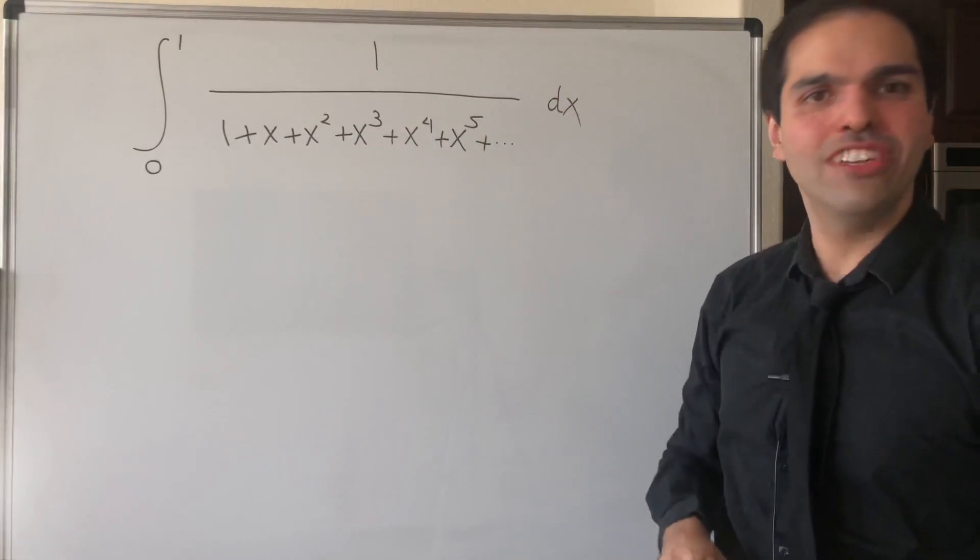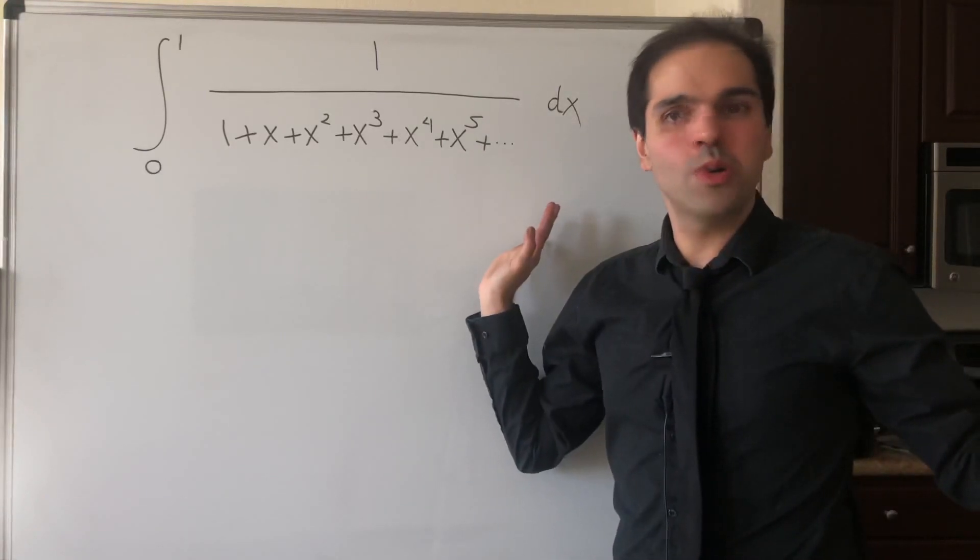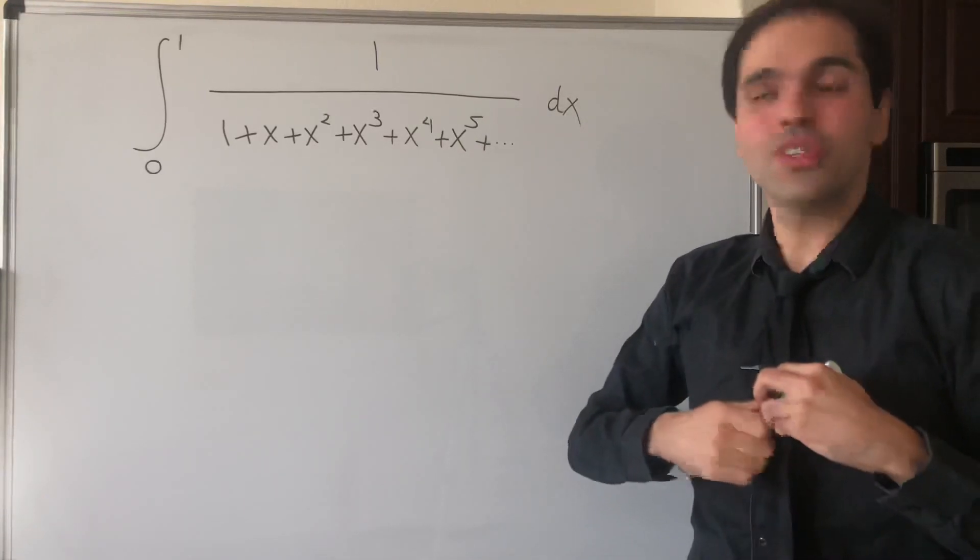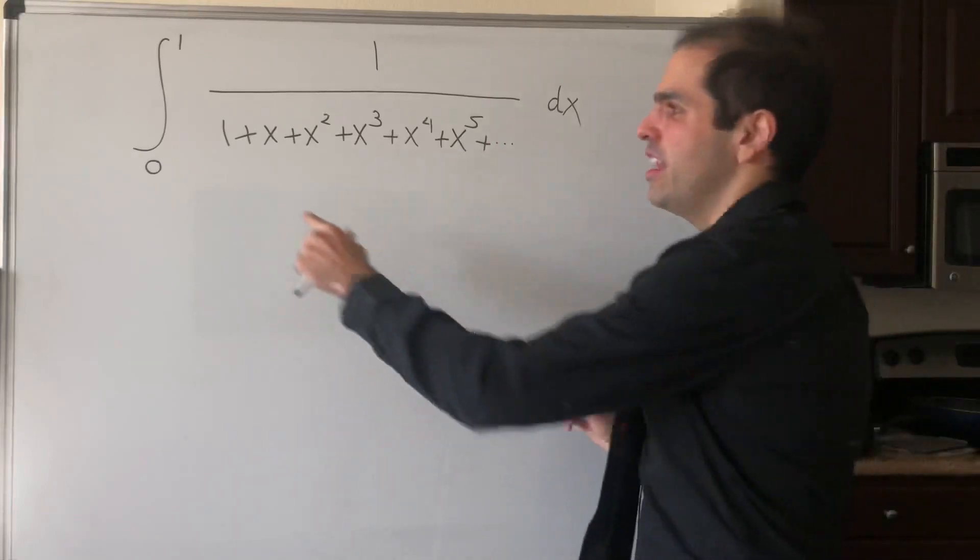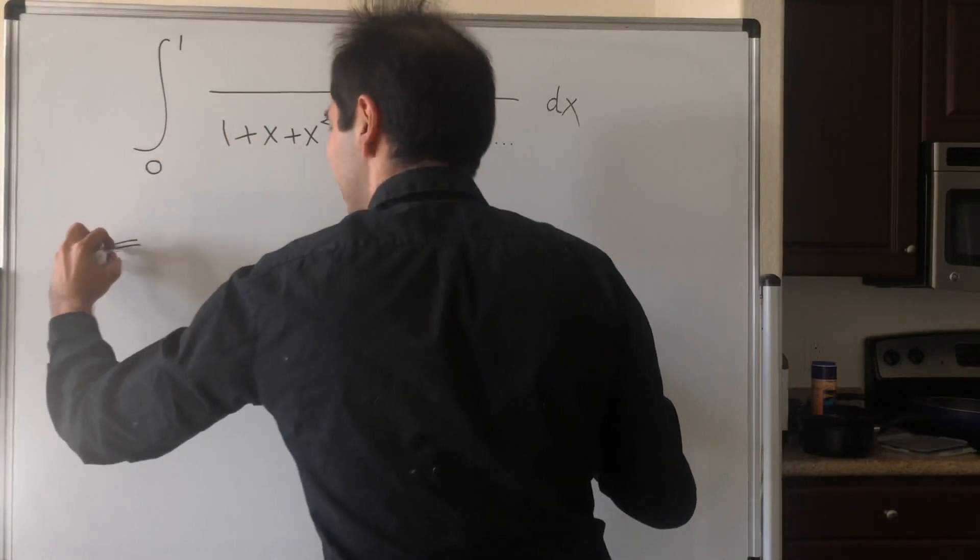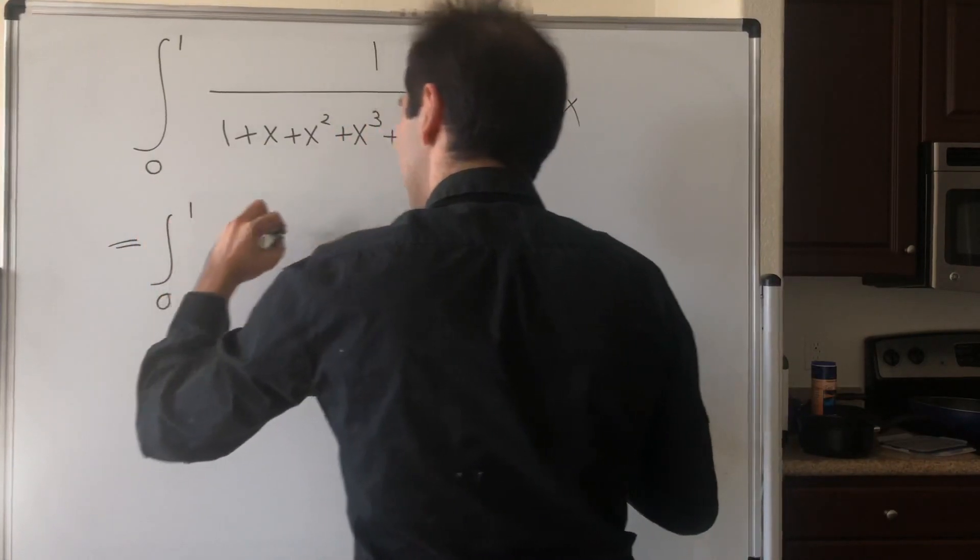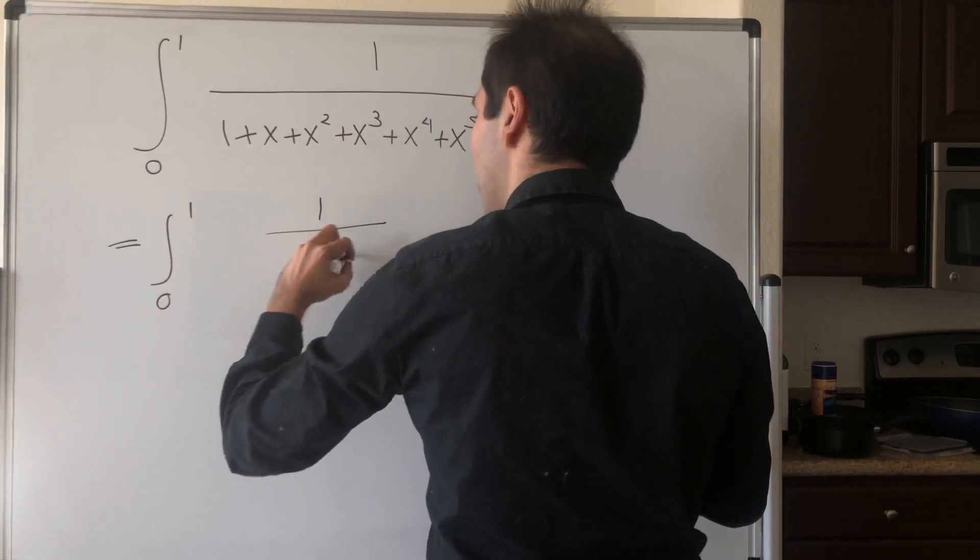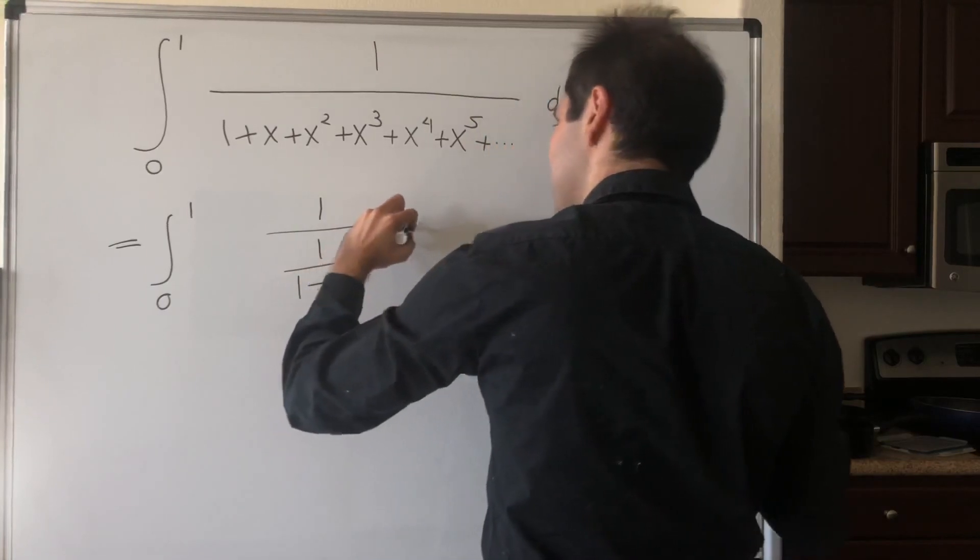So a pretty crazy infinite integral, but it turns out this integral isn't crazy at all because if x is between 0 and 1, this just becomes a geometric series. So the integral from 0 to 1 of 1 over 1 minus x dx.